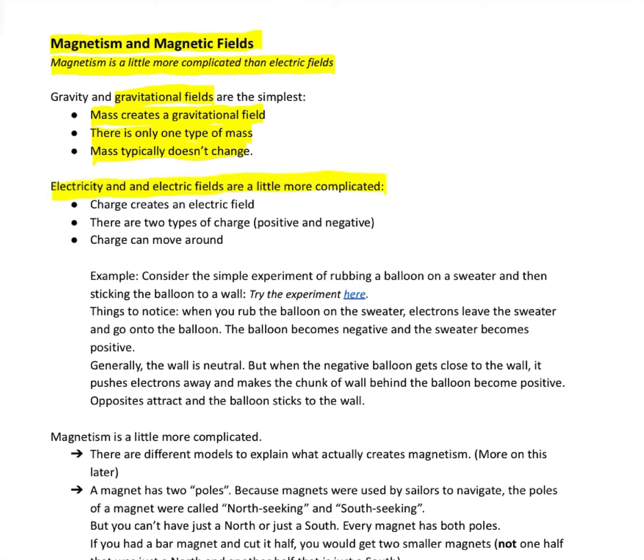Electricity and electric fields are a little bit more complicated. Charge creates the electric fields, but we've got two kinds of charge. Historically, they called them positive and negative. And charge can move around.